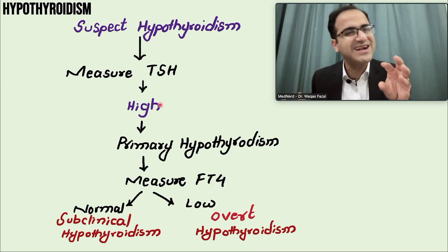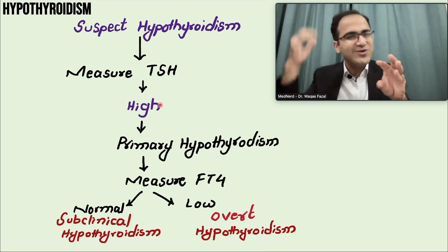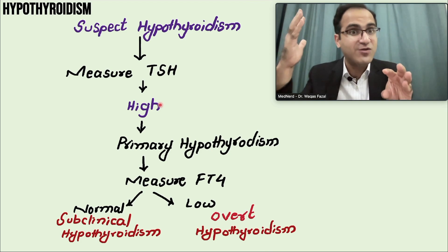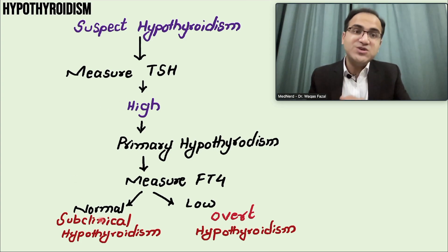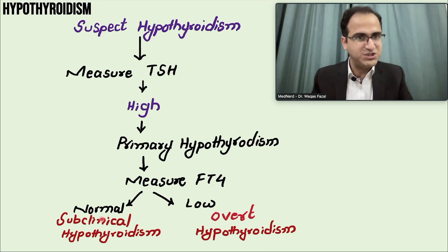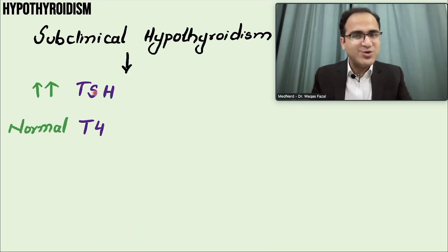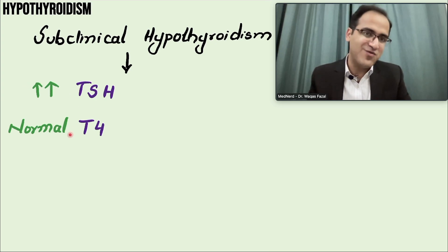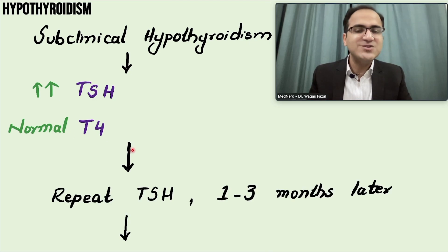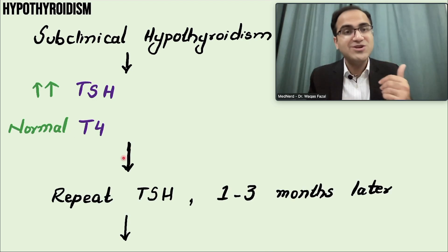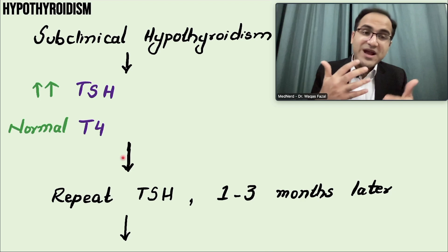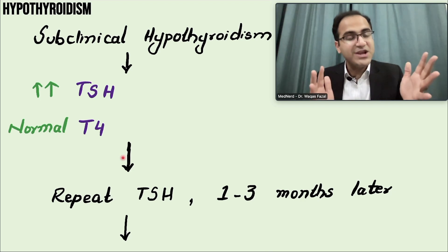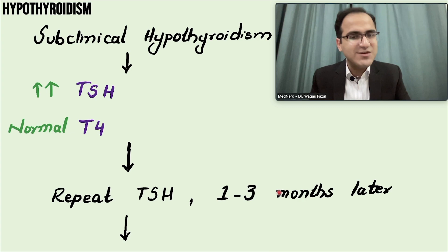But for how long would that thyroid gland produce a normal amount due to increased stimulation? It would definitely shut down after some time. Therefore, subclinical hypothyroidism eventually converts to overt hypothyroidism. In subclinical hypothyroidism you see increased TSH with normal T4 levels. What you do in these patients is ask them to come back in one to three months and repeat the TSH levels — to see whether it was an acute thing that resolves on its own or whether it is developing into overt hypothyroidism.